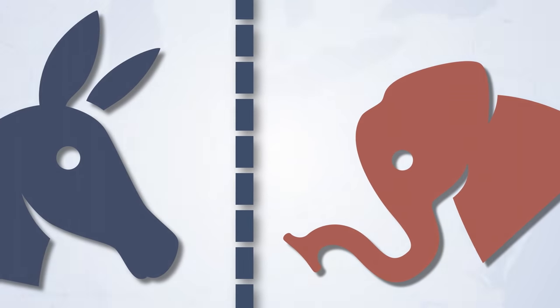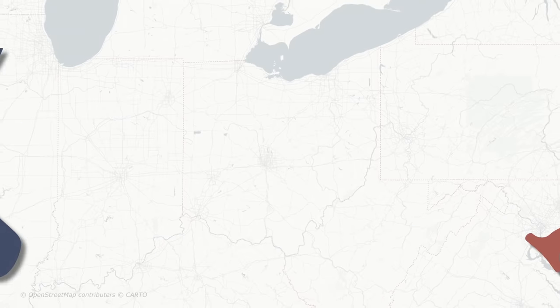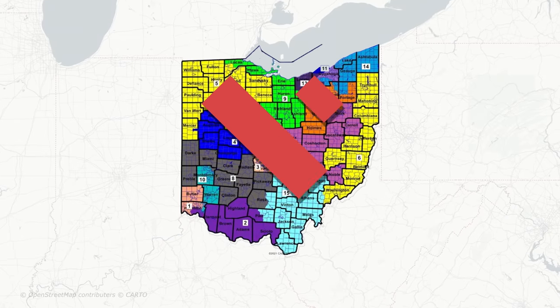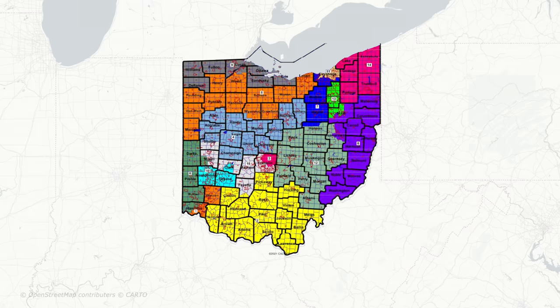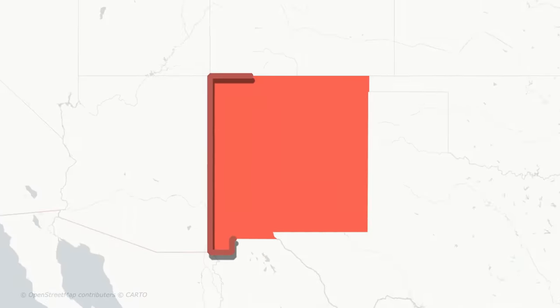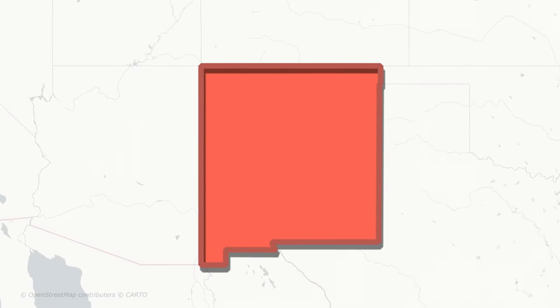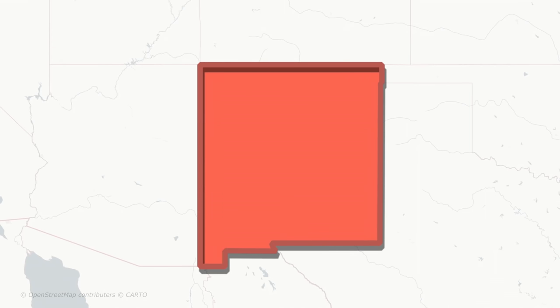In Ohio, the state's Supreme Court struck down the first set of congressional maps because the court ruled they were too partisan. And the second version is facing lawsuits. With early voting already underway, this map will probably stand. In New Mexico, the state's Republican Party brought a lawsuit challenging the maps, calling them unfair.